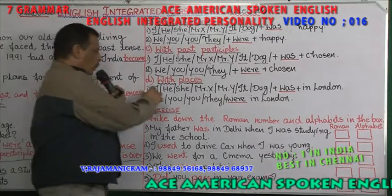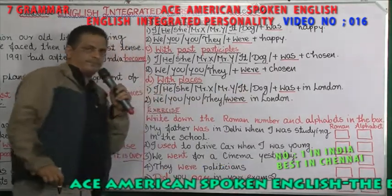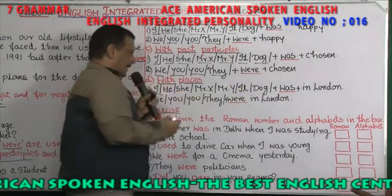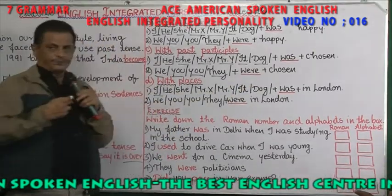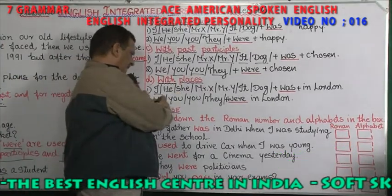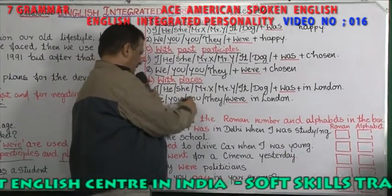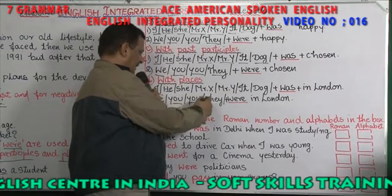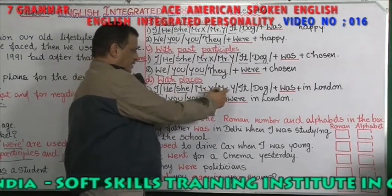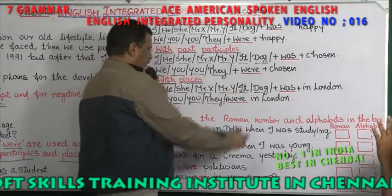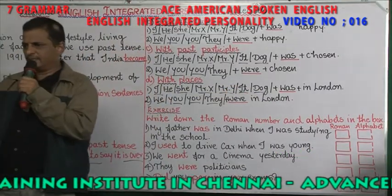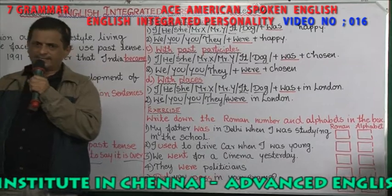With places — past tense. I was in London, he was in London, she was in London, Mr. X was in London, Mr. Y was in London, it was in London, dog was in London — something was somewhere. For plural: we were in London, you were in London, they were in London.